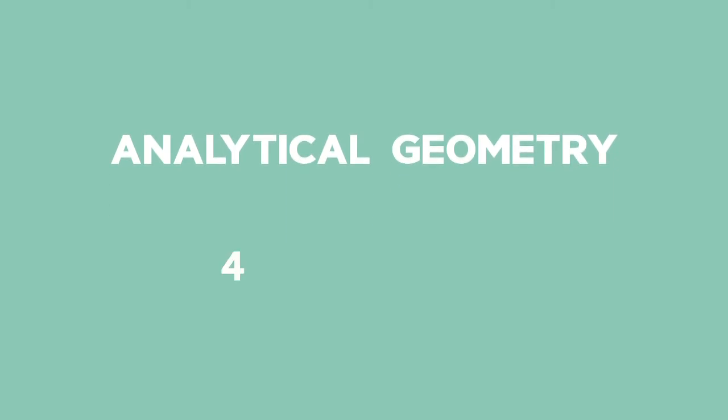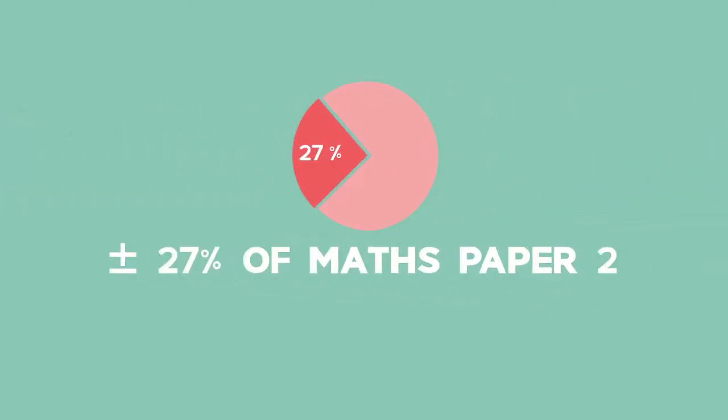Analytical geometry is roughly 40 plus minus 3 marks in the final exam, which is approximately 27% of maths paper 2.